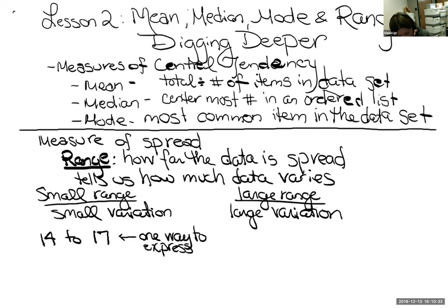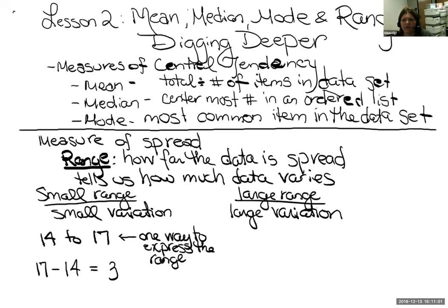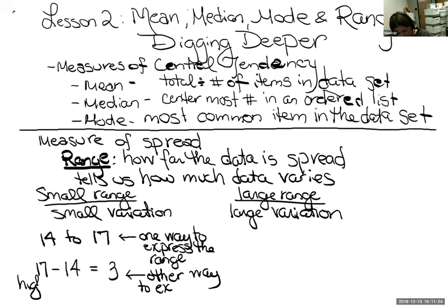You can express the range as the span of numbers — basically the difference between the two numbers. Difference is always positive, so start with the higher number, 17, and subtract the lower number, 14. The data only ranges by three years. One way to express the range is to give both end numbers like 14 to 17. The other way is just to give the difference between the two — high minus low — so you get a positive answer.